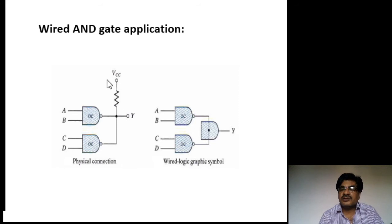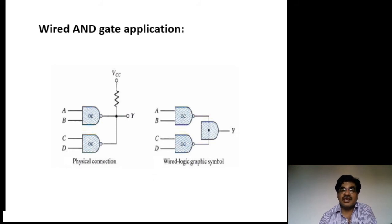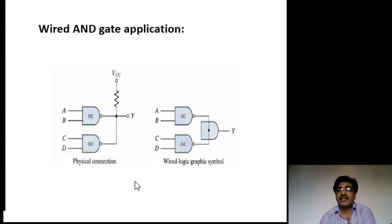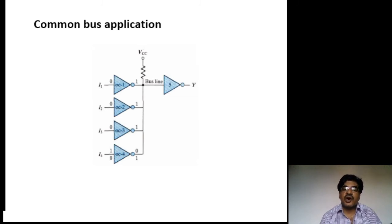This circuit realizes an AND-OR-INVERT (AOI) gate. The equation for this logic diagram is: output = (AB + CD) whole bar — that means AB + CD inverted. That is the application of the open collector wired-AND gate.